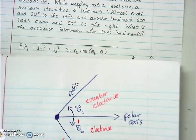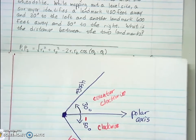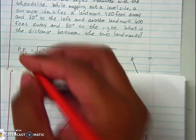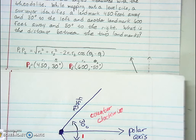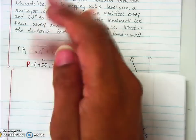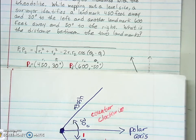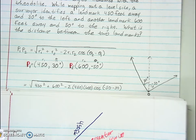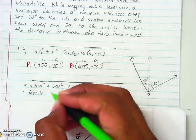Now applying the formula, our ordered pairs are: p1 = (450, 30°) and p2 = (600, −50°). We plug in r1, r2, theta1, and theta2 into the polar distance formula, work it out on the calculator, and get the answer.